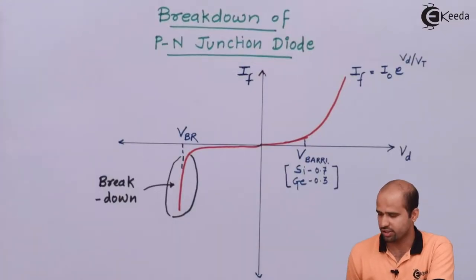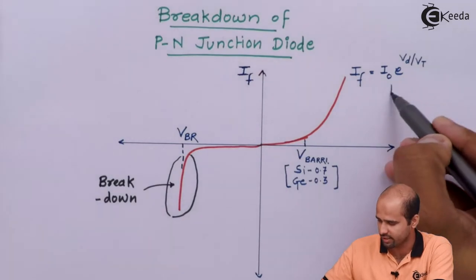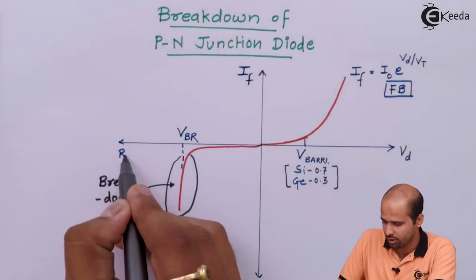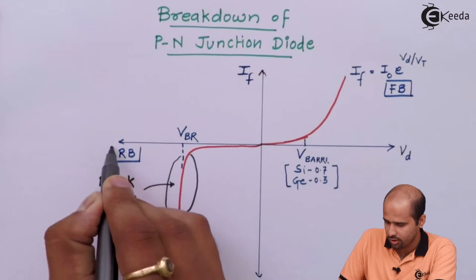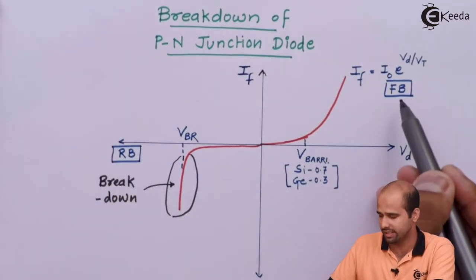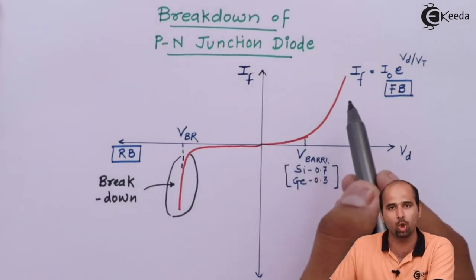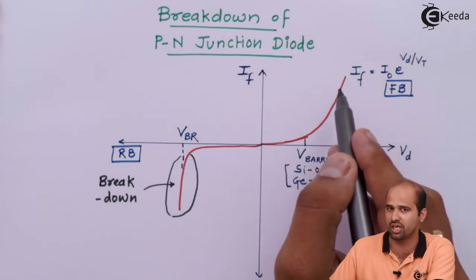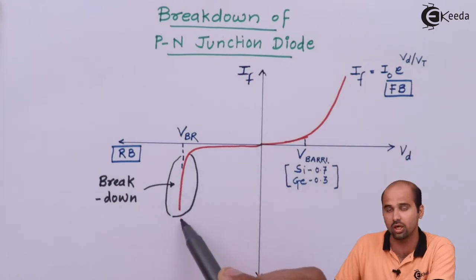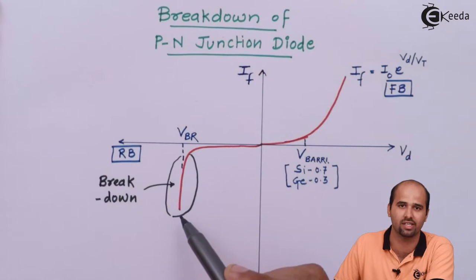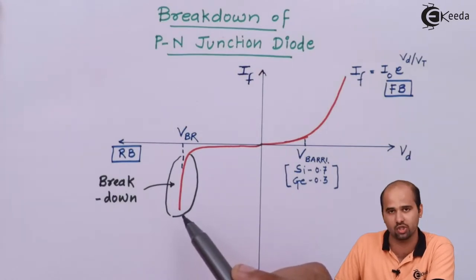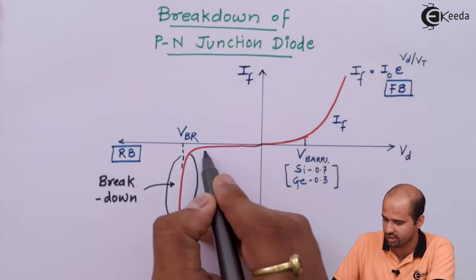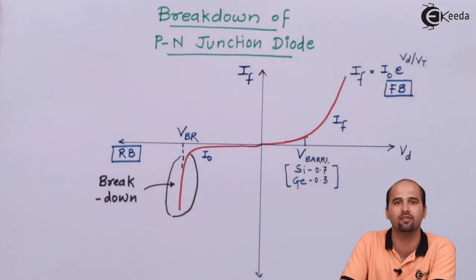Let us look at these characteristics. These characteristics are nothing but the forward bias characteristics in quadrant number 1 and reverse bias characteristics in quadrant number 3. When I am saying that this is forward bias, that means current is flowing from anode to cathode — that's why current is positive. This is current due to majority charge carriers, and the current which is flowing in the third quadrant is exactly in the opposite direction, from cathode to anode. This current is called minority charge carrier current. So this current is IF and this current is I0, which is nothing but reverse saturation current.